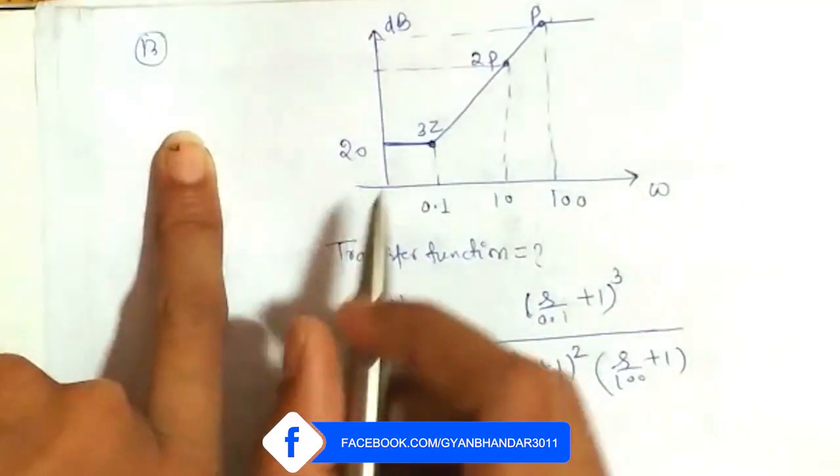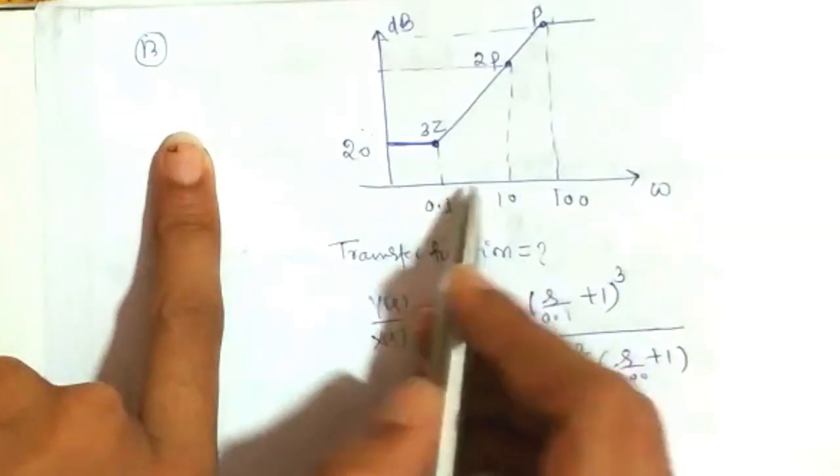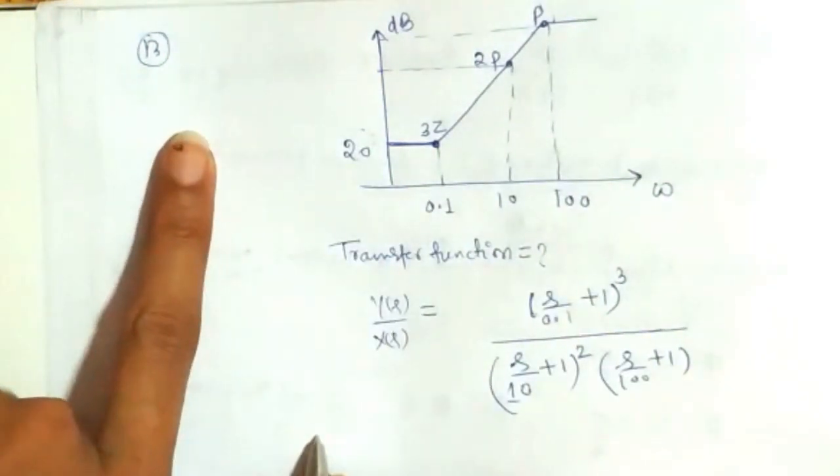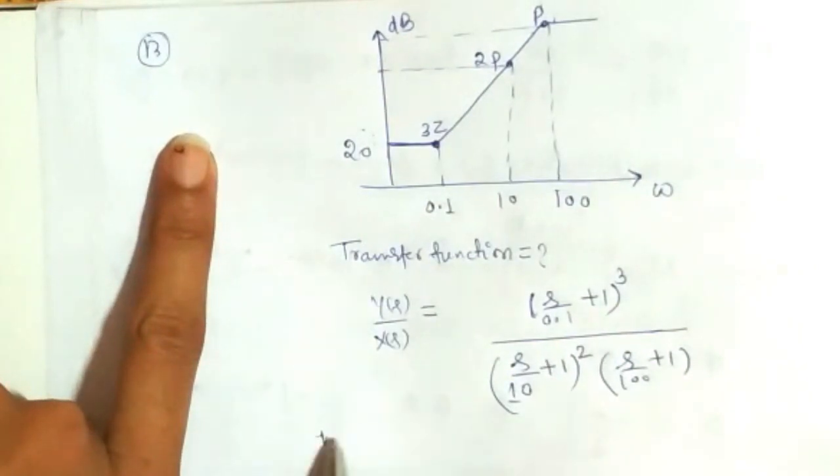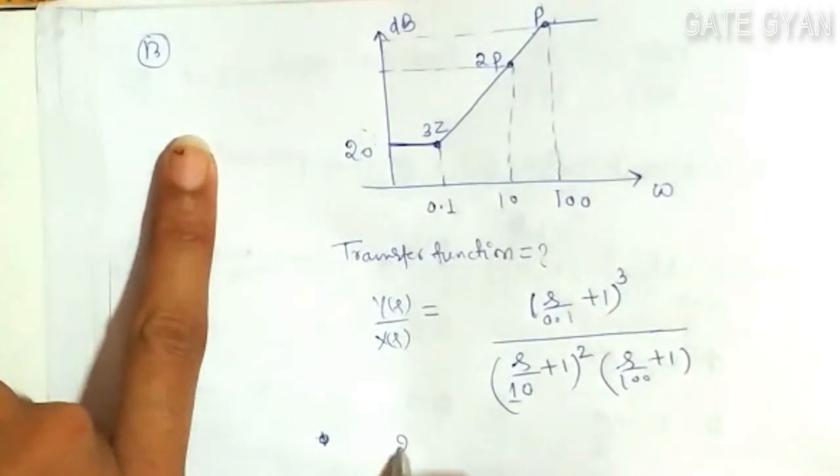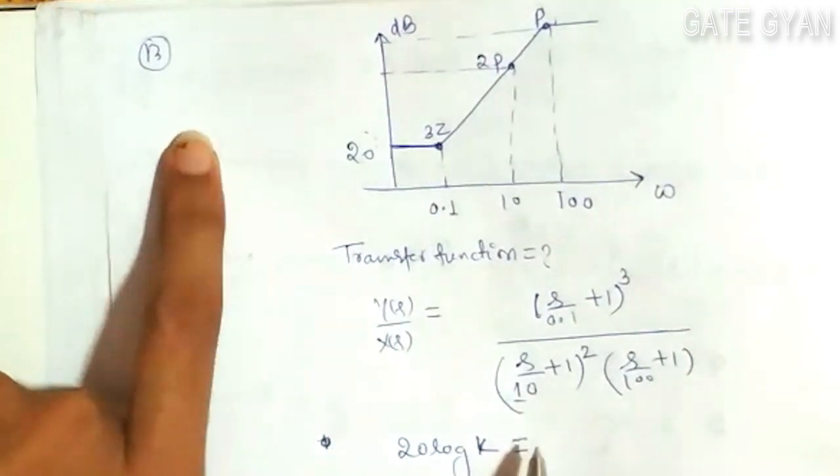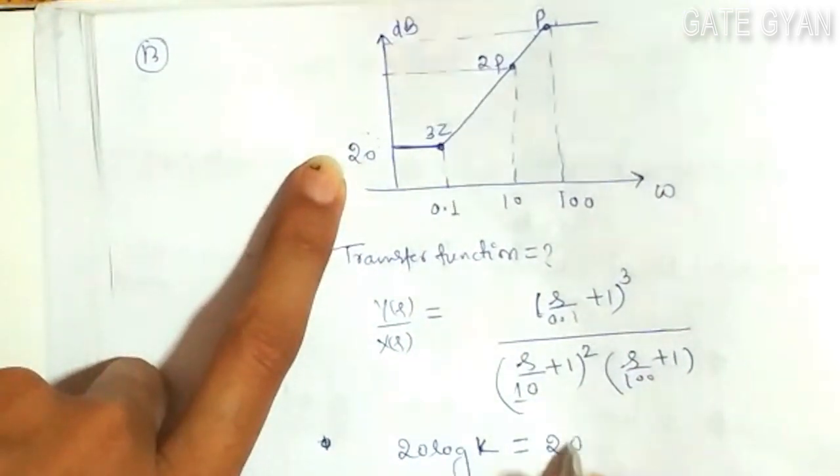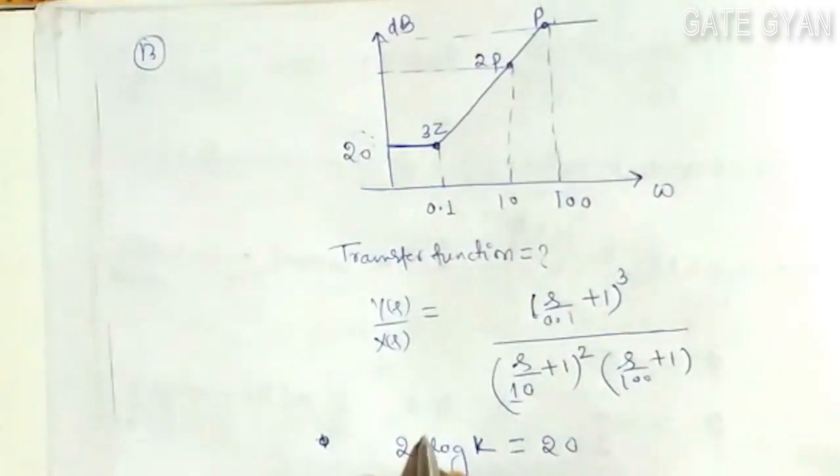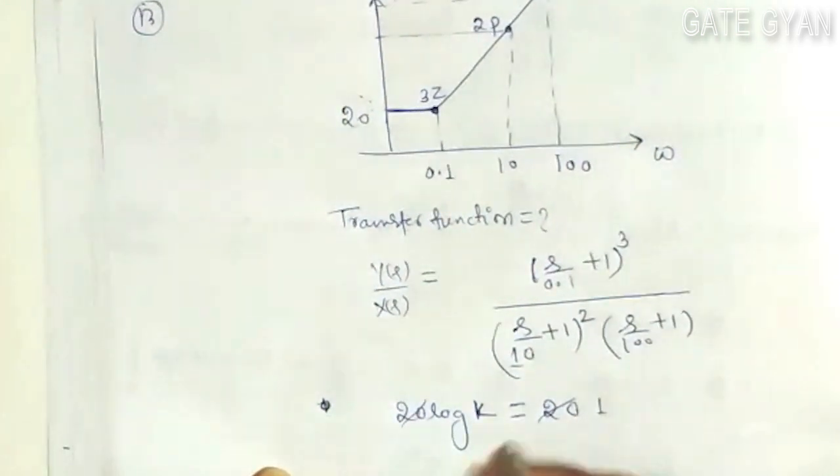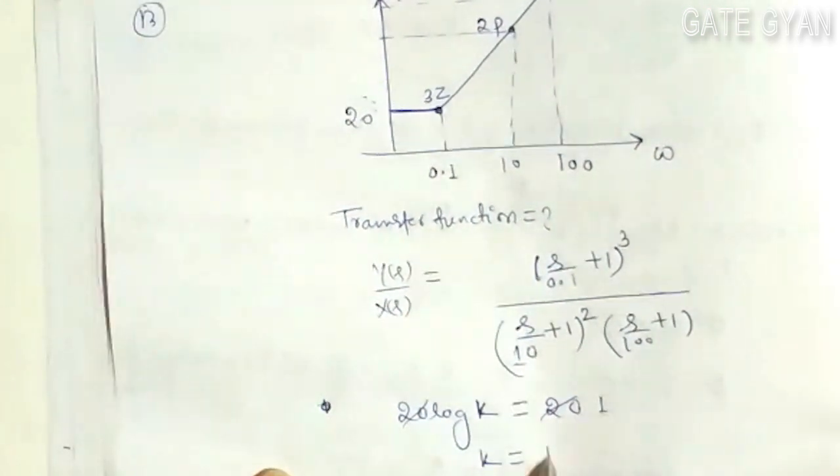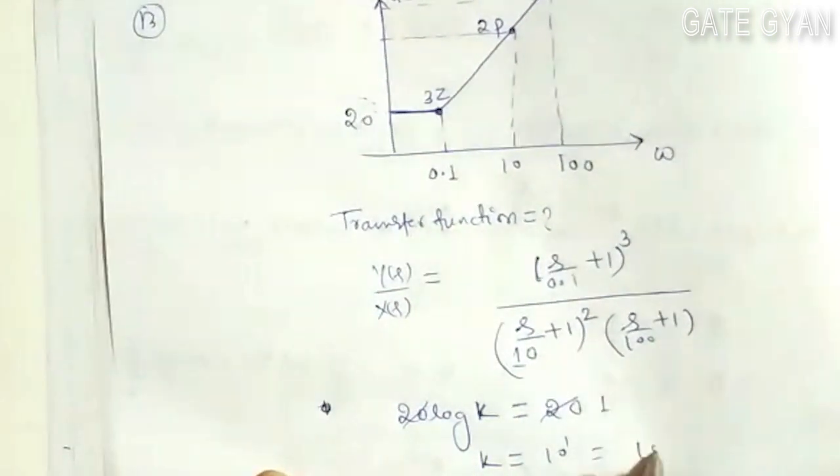And gain of the system, I will get at 20 log K, gain K. K I will get by using formula, 20 log K is given as 20. From here I will get, so my K is going to be 10 to the power 1, that is going to be 10.